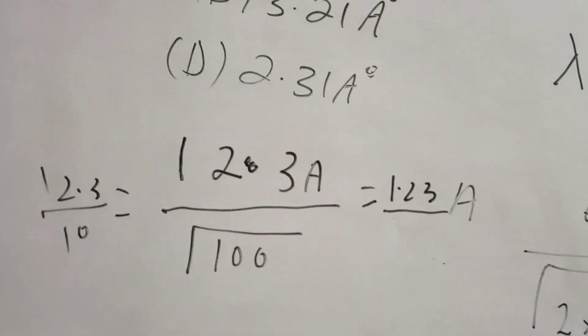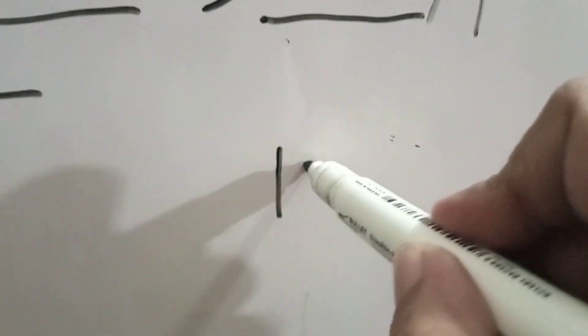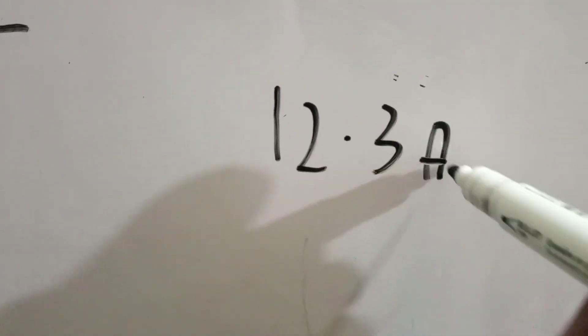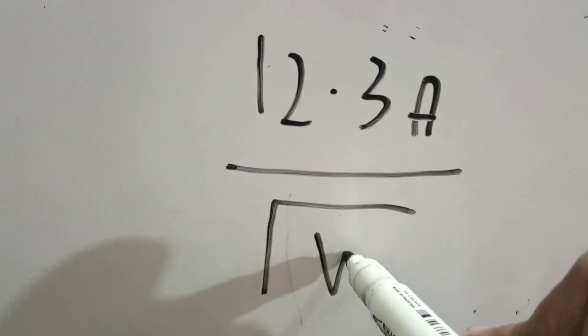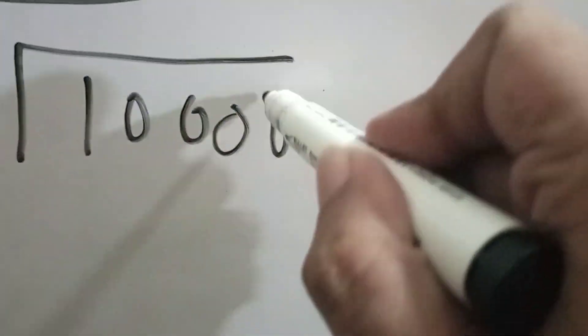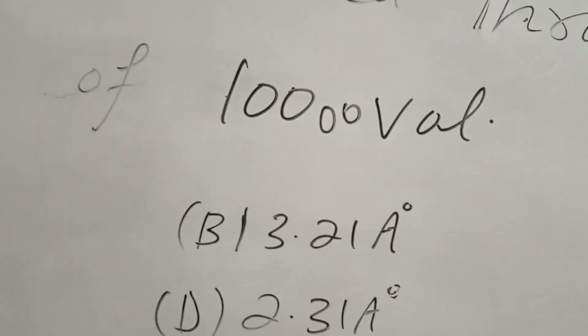What is my magical trick? This is the 12.3 Angstrom. How much is the voltage?